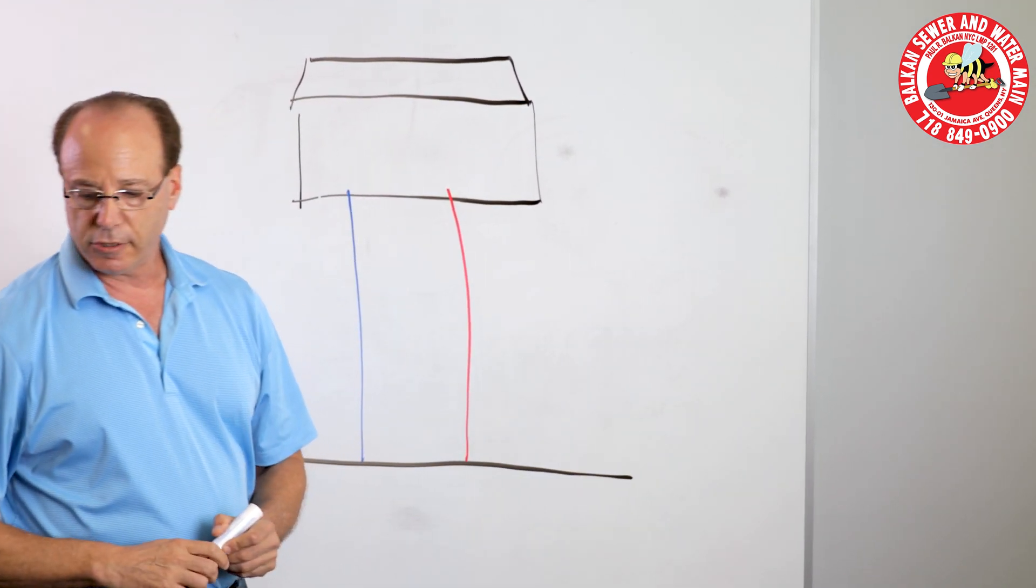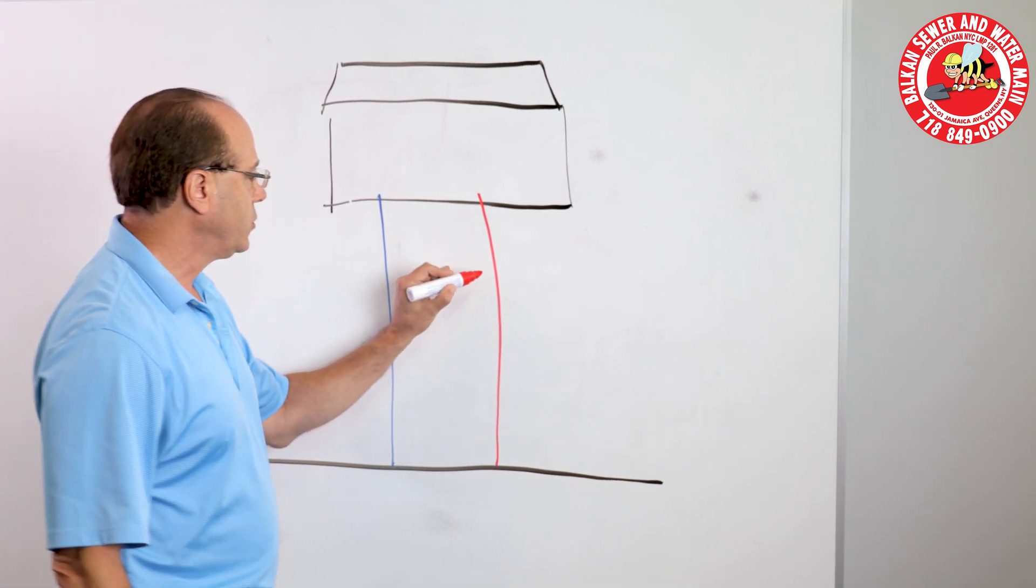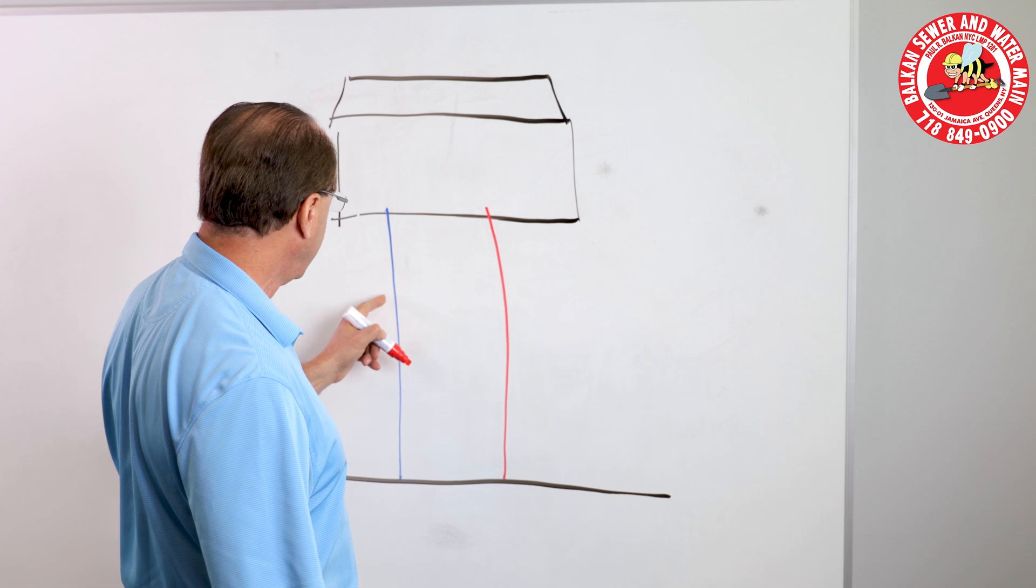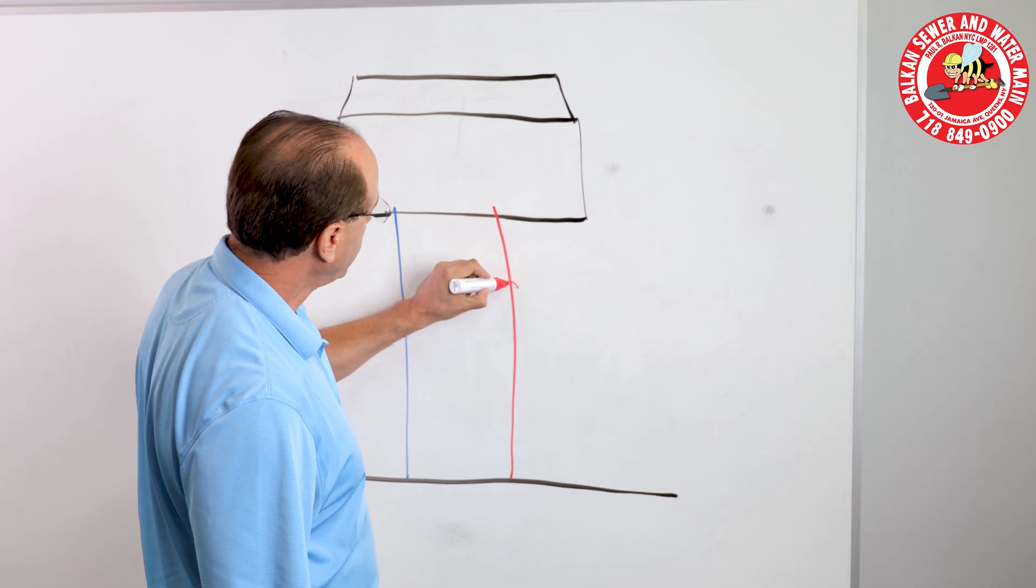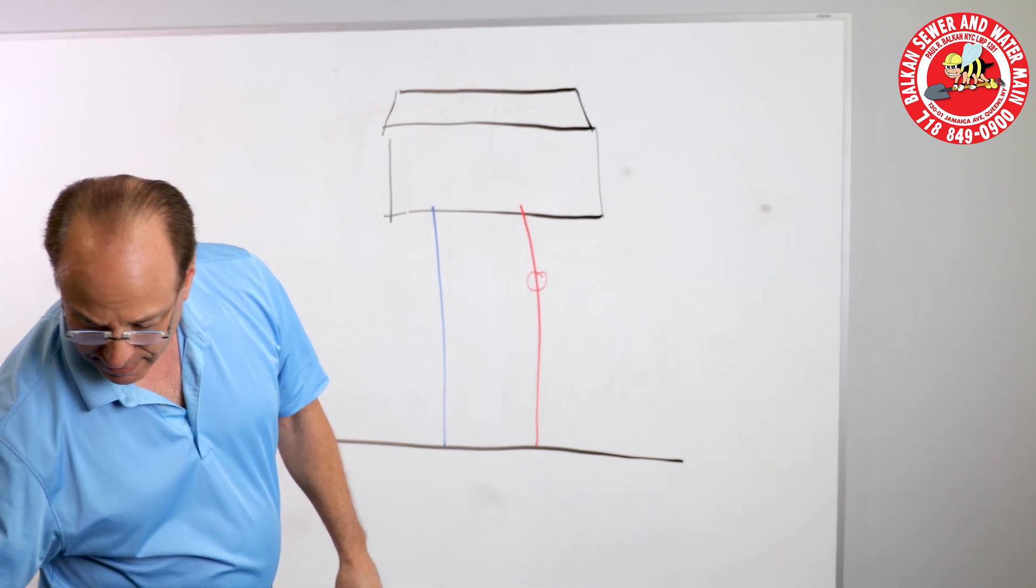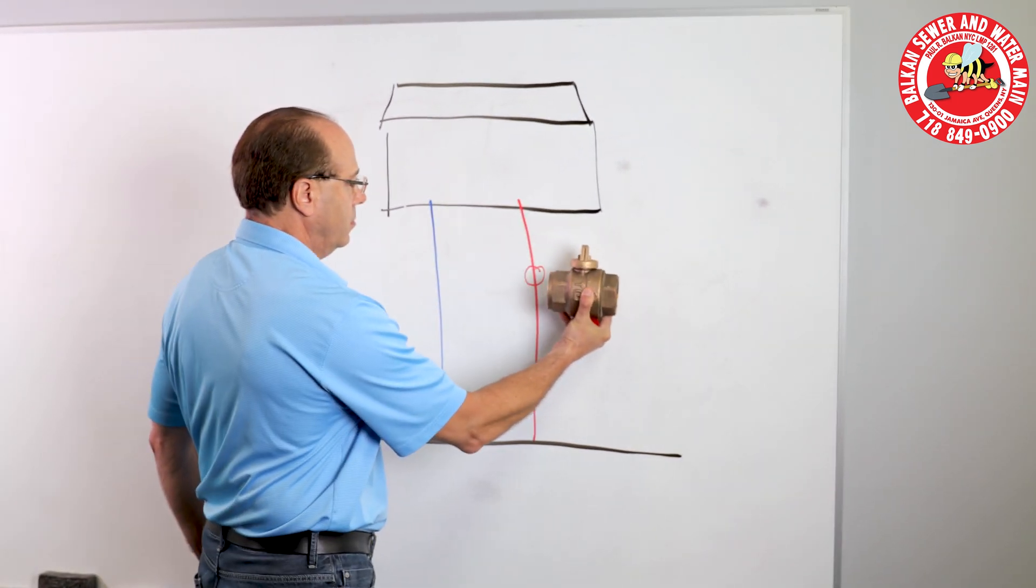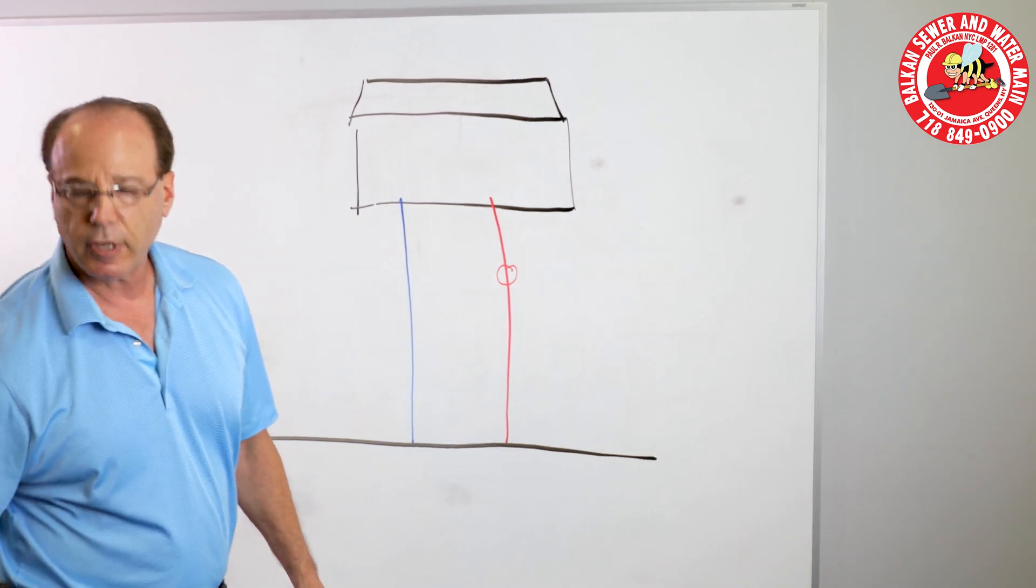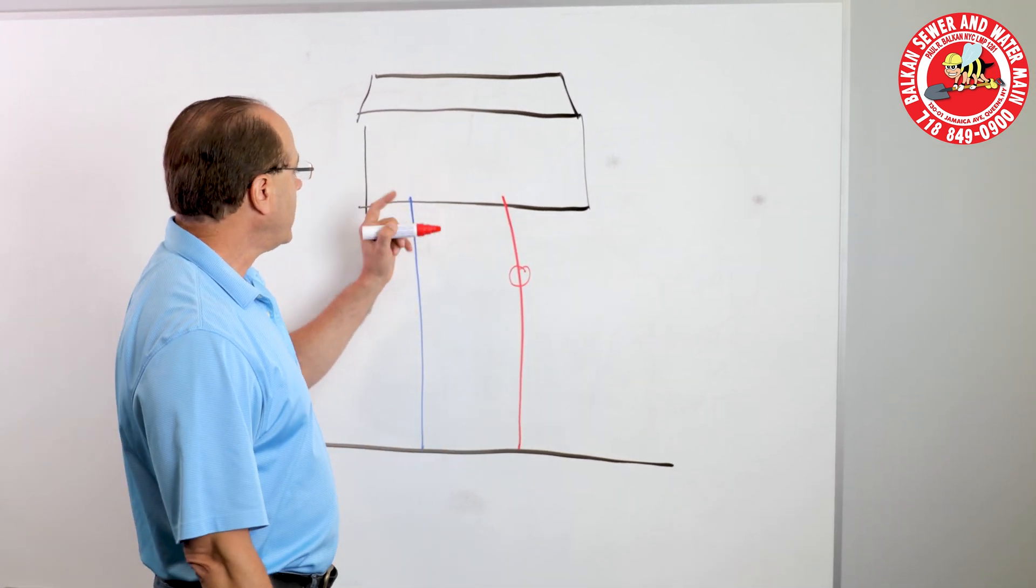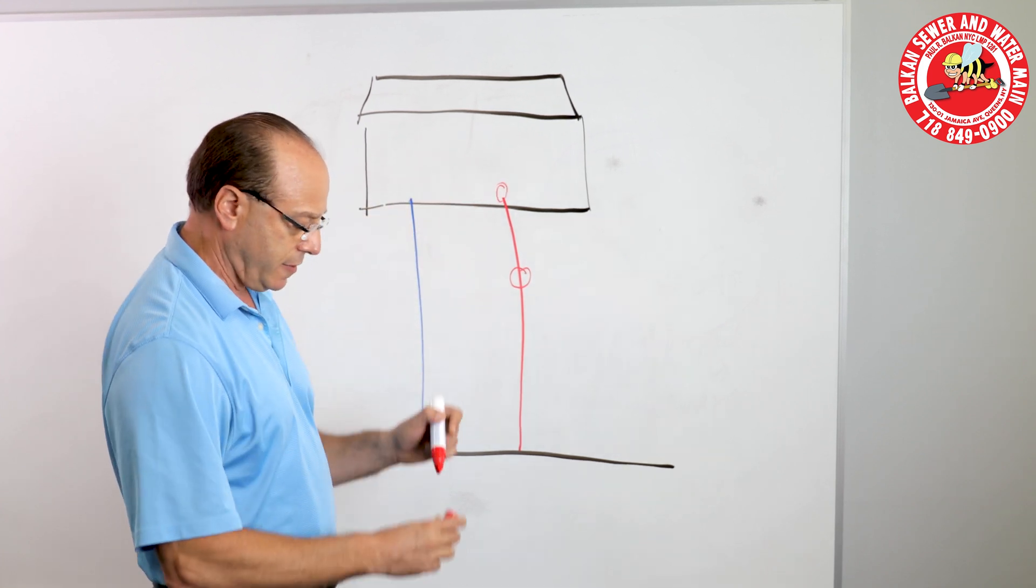But, there are some differences. One of the differences are, in New York City anyway, a fire main, not at most domestic mains, is required to have a curb valve. A curb valve could look something like this. And that would have a box on top of it. You can see those boxes in the sidewalk area.